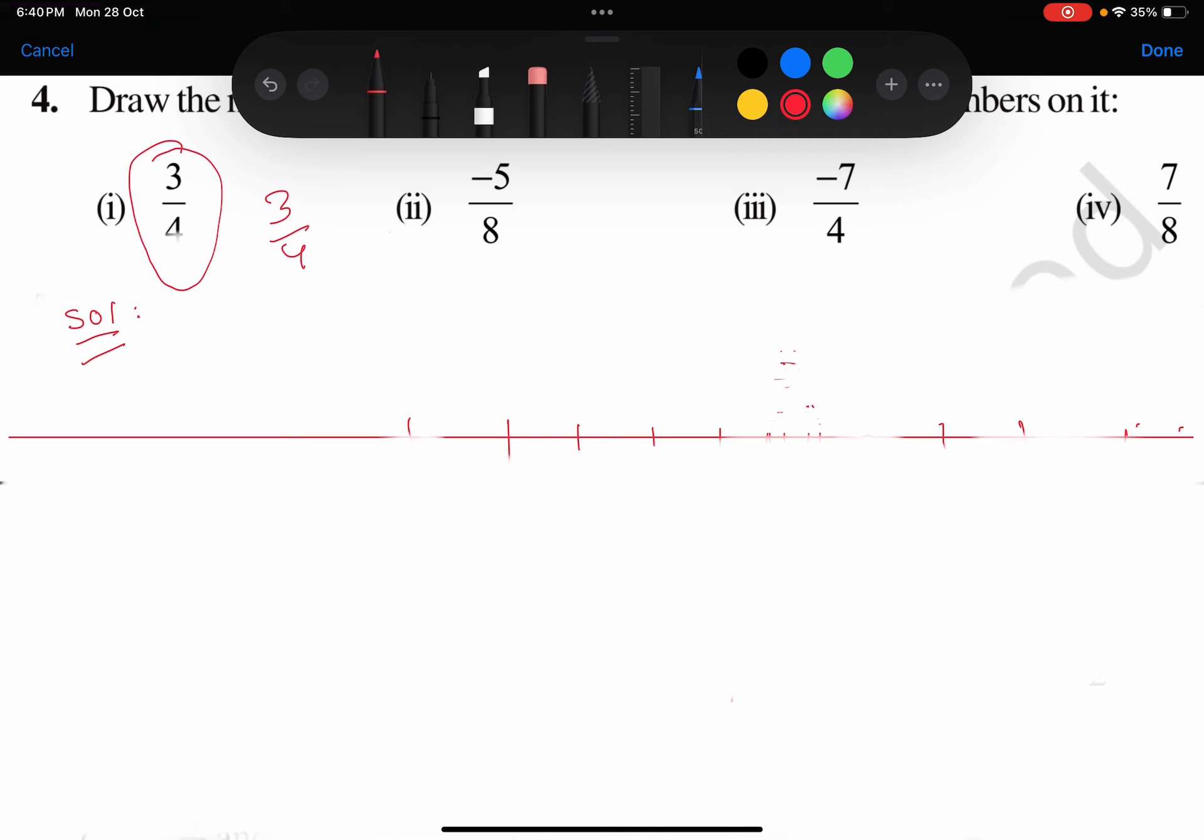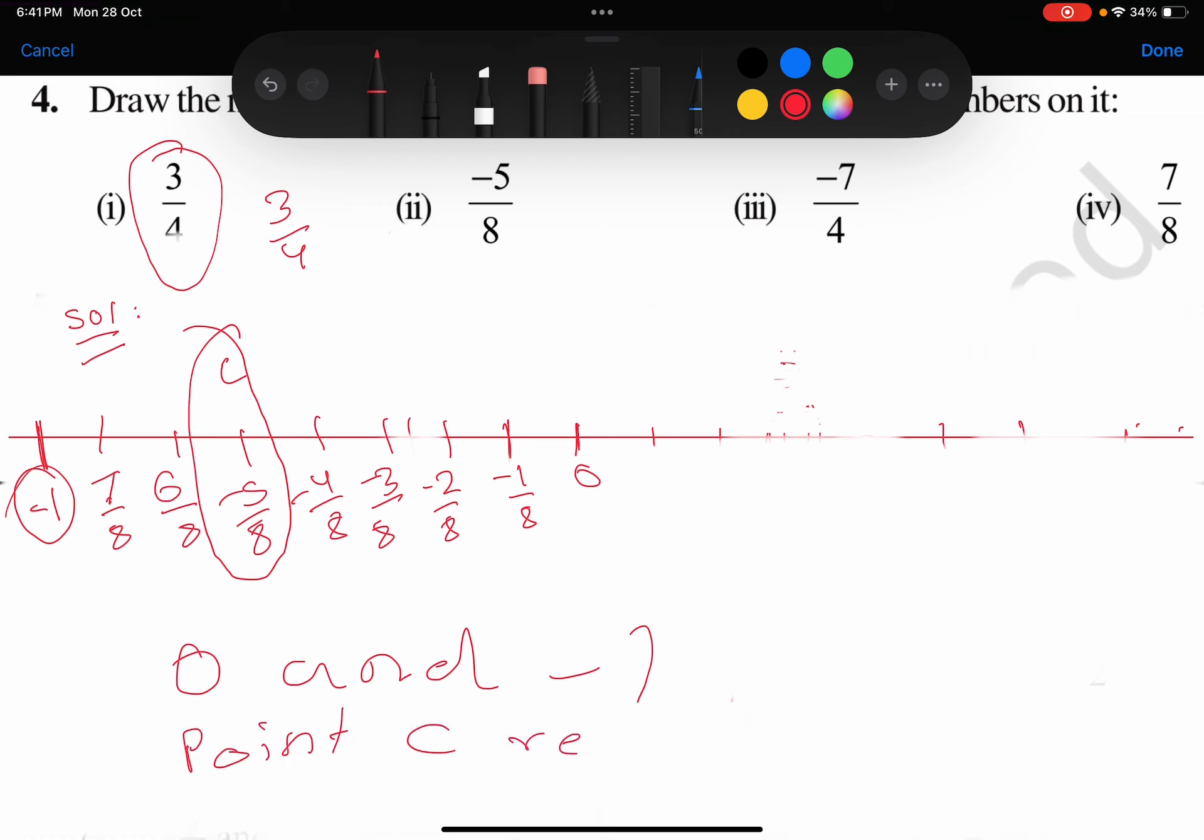The denominator is 8 and the numerator is minus 5, so minus 5 lies on the left side of 0, it's negative. This will be 0, minus 1/8, minus 2/8, minus 3/8, minus 4/8, minus 5/8, and I'll represent it as point C. Then 6/8, 7/8, and here it will become minus 1.